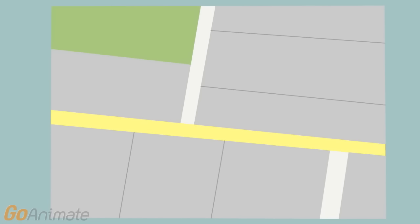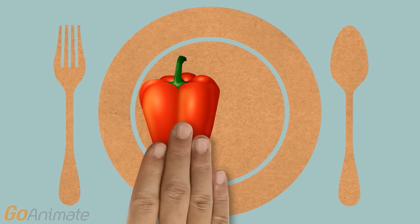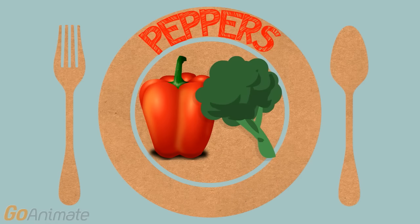Now, you might be wondering where you can find vitamin C. Well, the best sources of vitamin C are fruits and vegetables. Peppers and broccoli have the highest vitamin C content among the many kinds of vegetables.